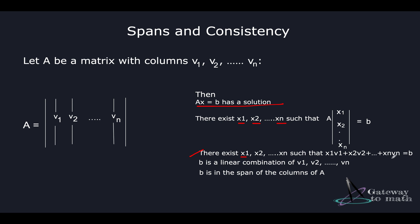If this condition is true, that means b is the linear combination of vectors v1, v2, ..., vn, which we've already discussed in past sessions. And since it's a linear combination, b is also in the span of the columns of A.